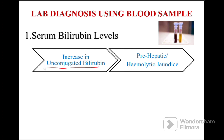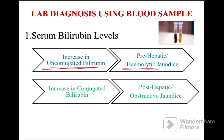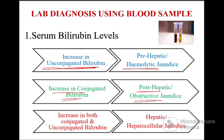Lab diagnosis using blood sample — serum bilirubin: if there is an increase in unconjugated bilirubin in serum, that is because of pre-hepatic or hemolytic jaundice. If there is an increase in conjugated bilirubin, the cause is either post-hepatic or obstructive jaundice. If there is an increase in both conjugated and unconjugated bilirubin in serum, the cause is either hepatic or hepatocellular jaundice.